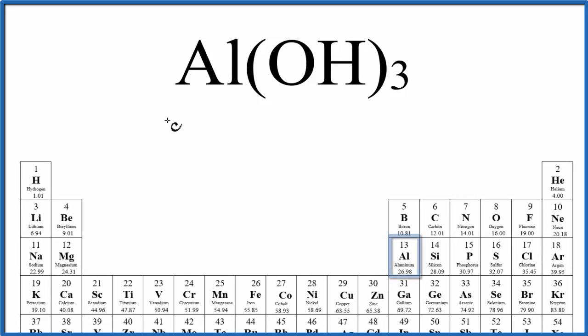On the periodic table, aluminum is 26.98 grams per mole, plus, let's put our parentheses here, oxygen, 16.00, plus hydrogen was the 1.01, and we'll multiply all that by three.